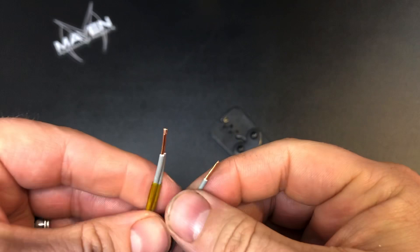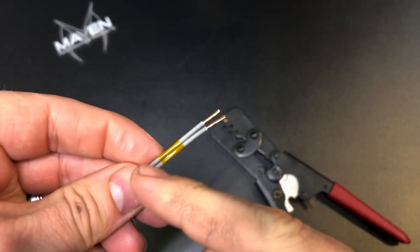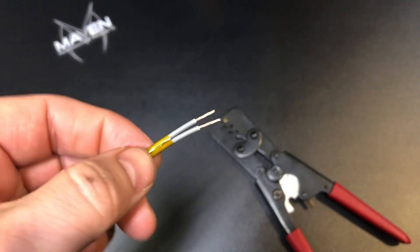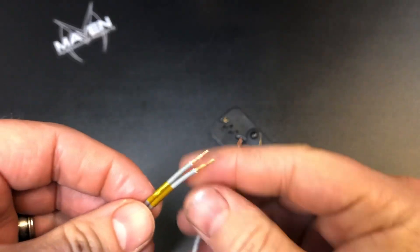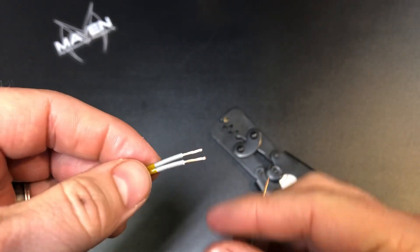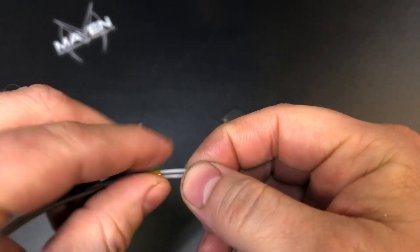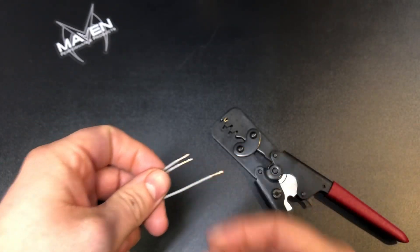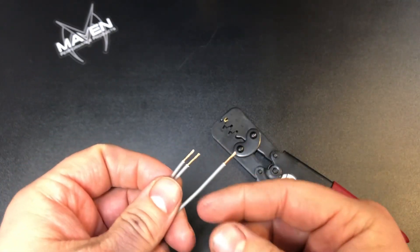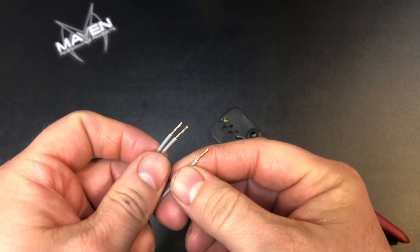A little piece of Kapton tape just kind of holds it together. You can pull it off later. This is more for just the fact that I don't have five hands. So from here we can go ahead and insert into the splice and crimp it down.